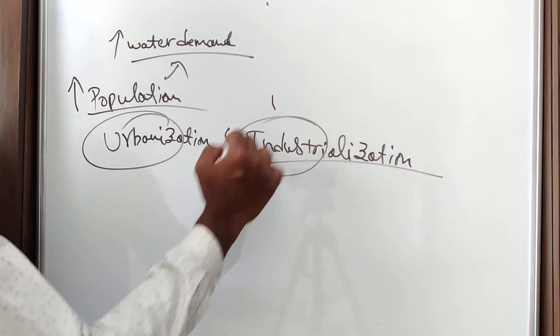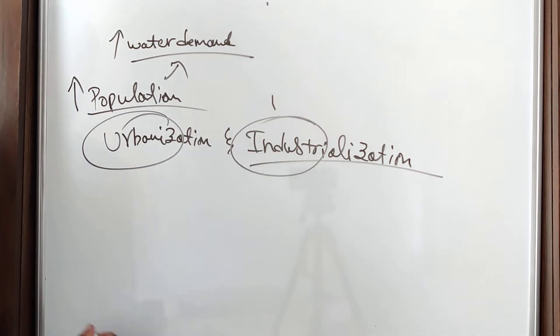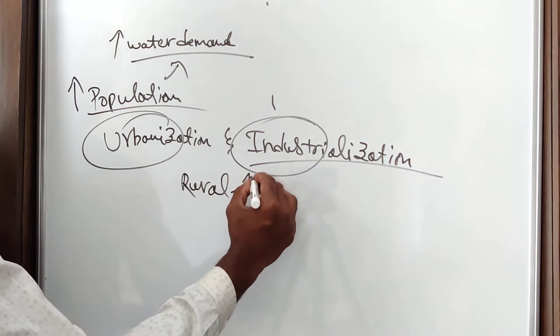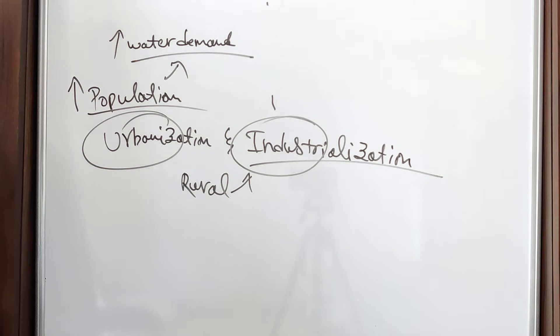As industrialization takes place, people from rural areas move to urban areas for jobs and other purposes, which creates mega cities like Bangalore, Mumbai, and Kolkata. Even though water was sufficient to the original population, the surplus population causes everyone to suffer water scarcity.